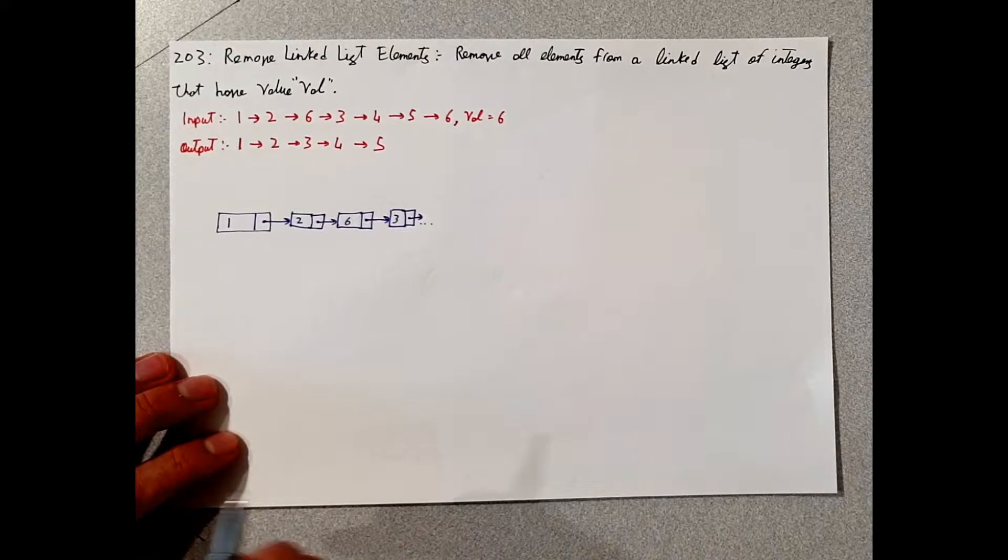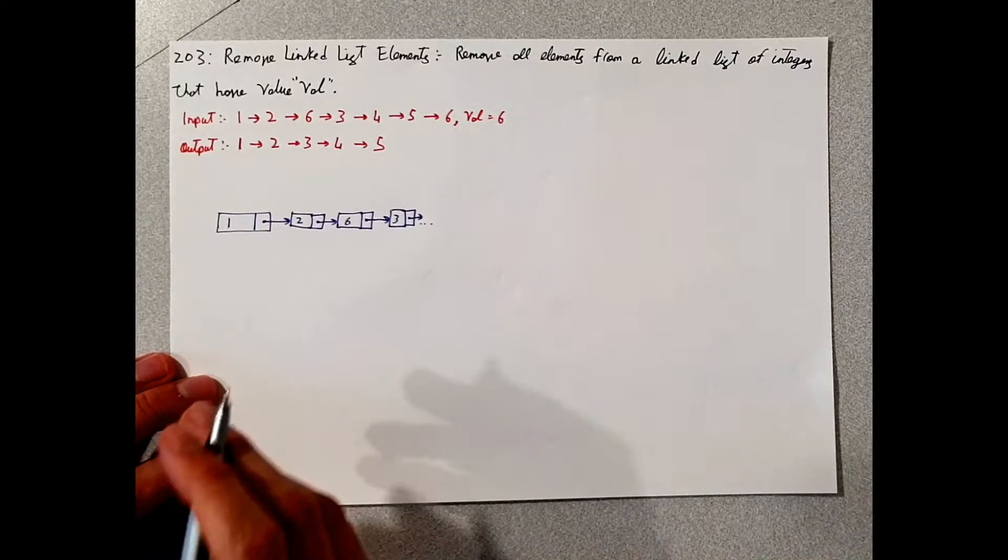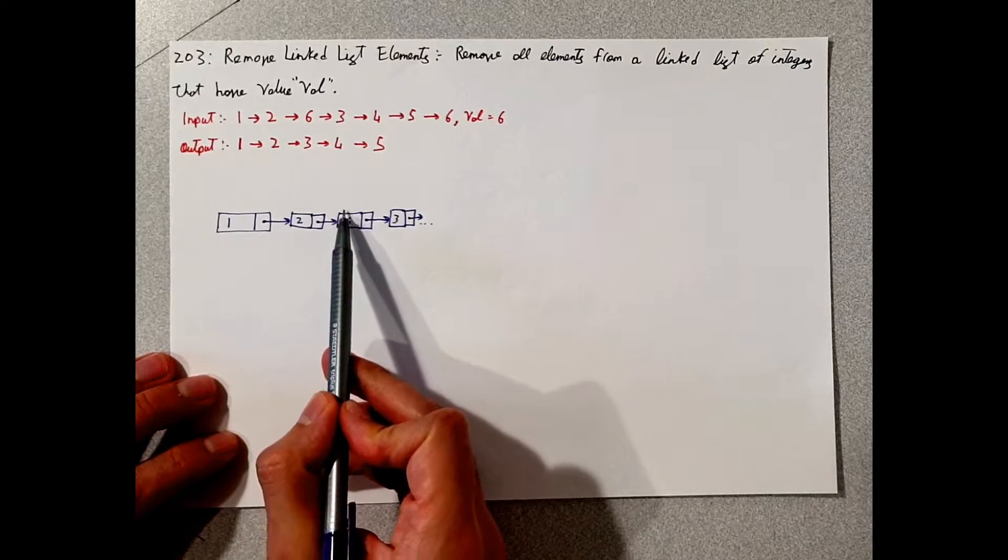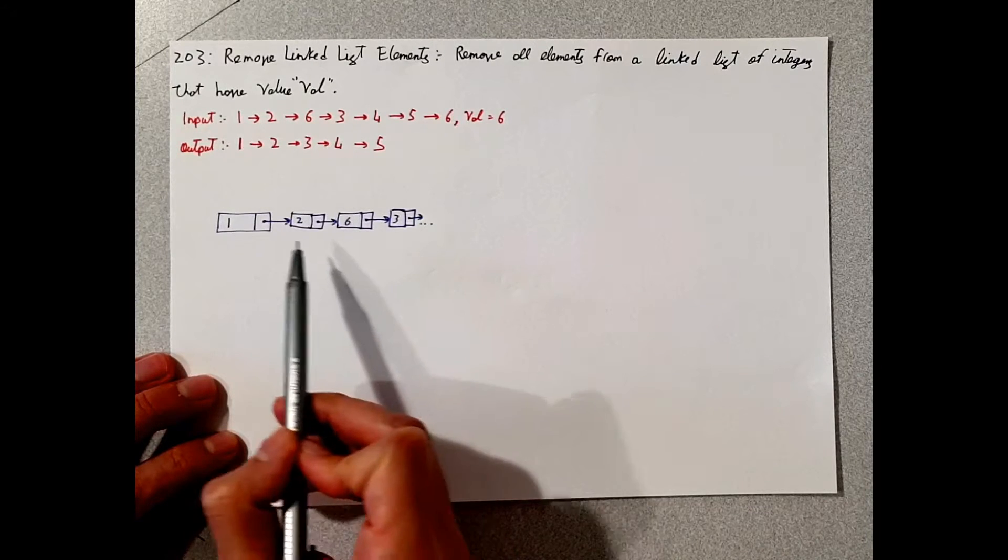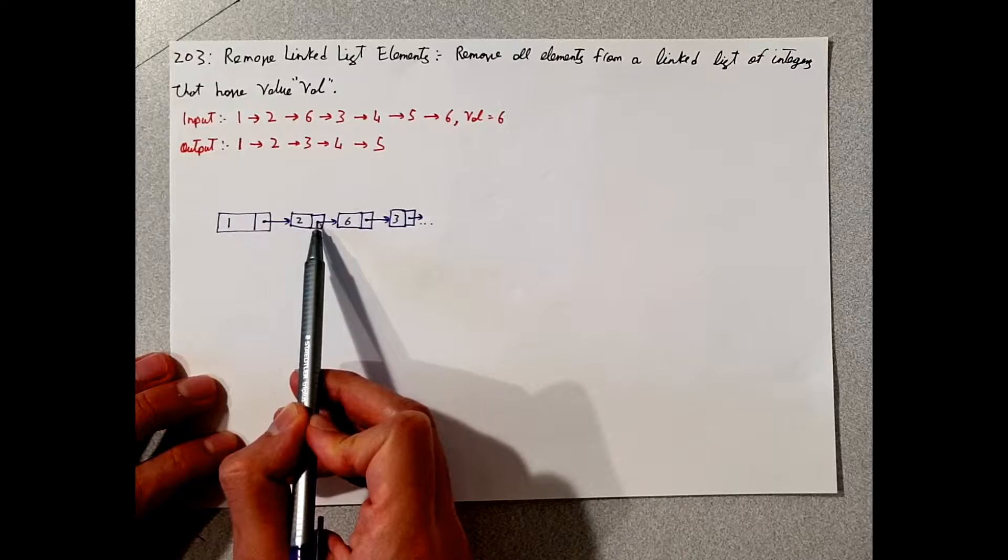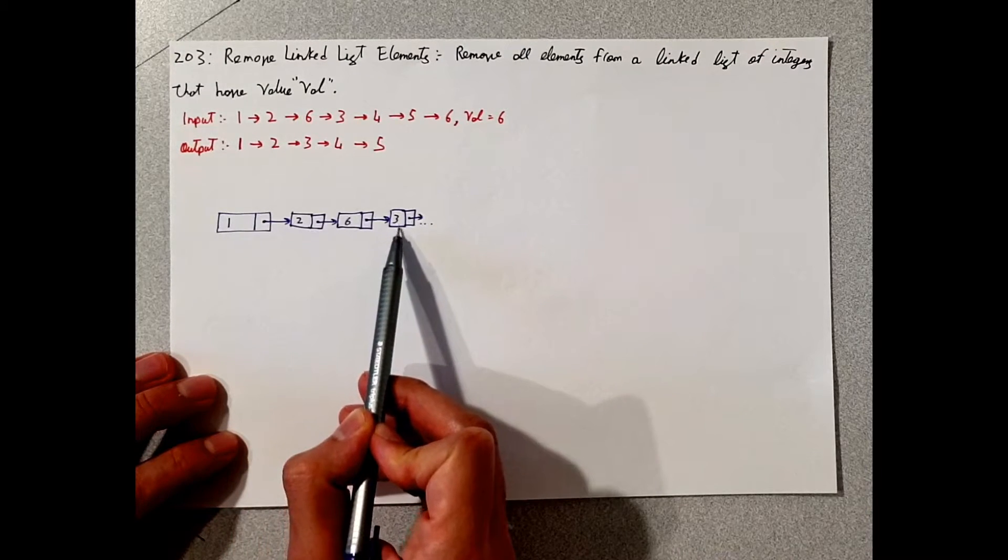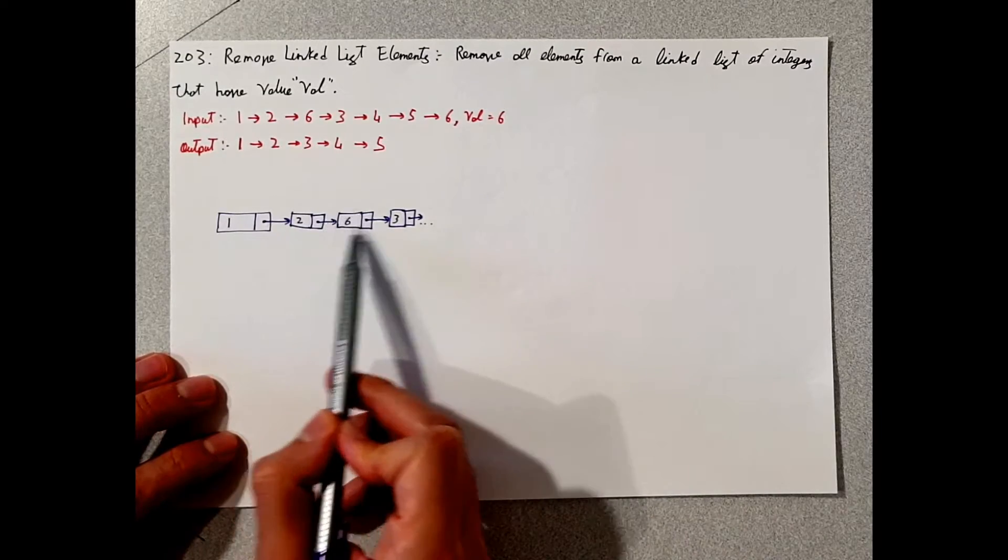The code will also be available in the description area. So the first thing we see here is that we want to delete the value 6 from this list, and by doing so, what we can do is connect the pointer of the second to the third here, therefore skipping this.